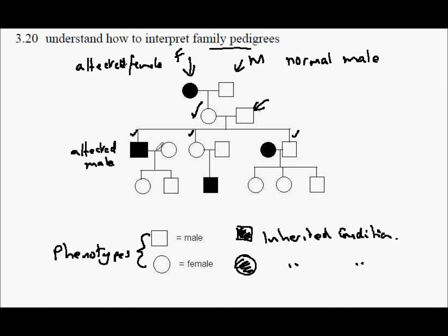These horizontal lines represent the partners of these children, and they in turn have children themselves, represented on this line. These are of course the great-grandchildren of the original couple. These children include a normal female, a normal male, an affected male, two normal females, and a normal male.